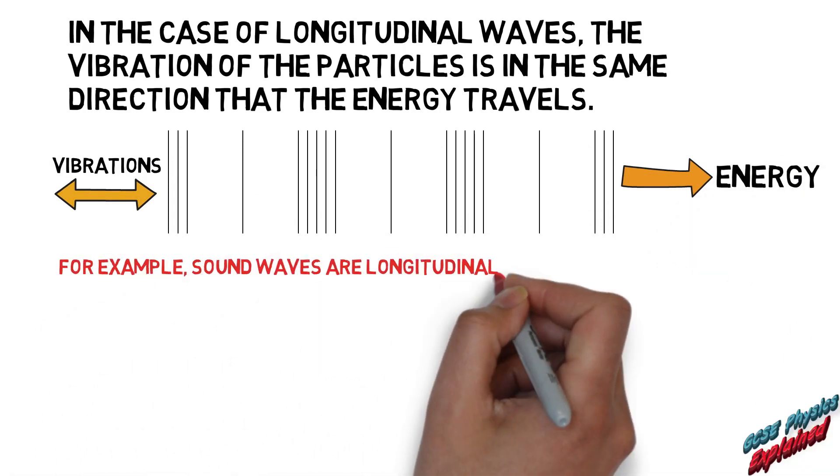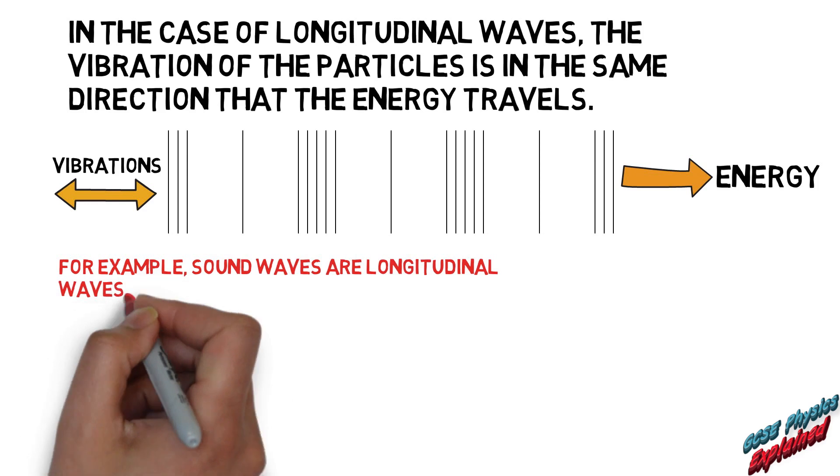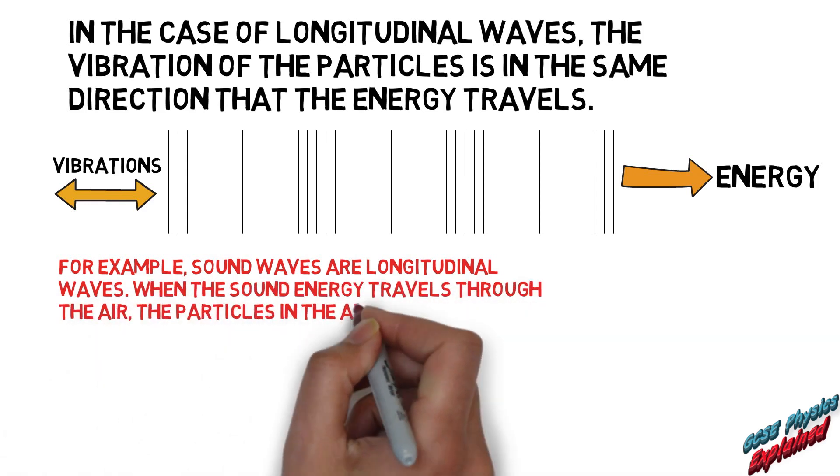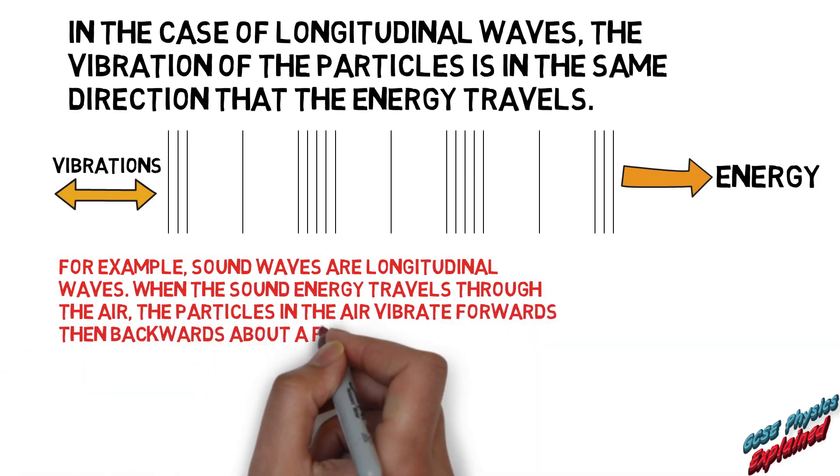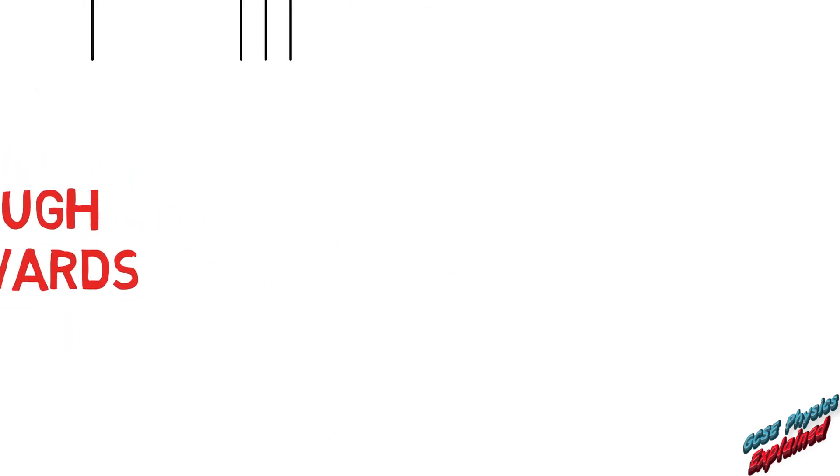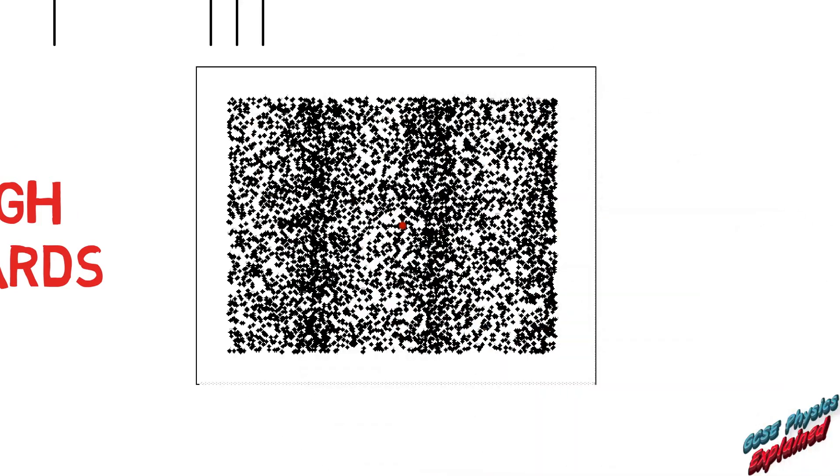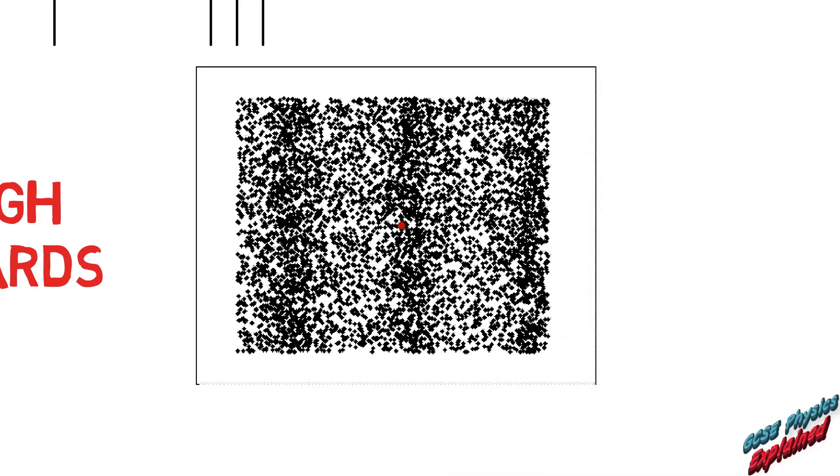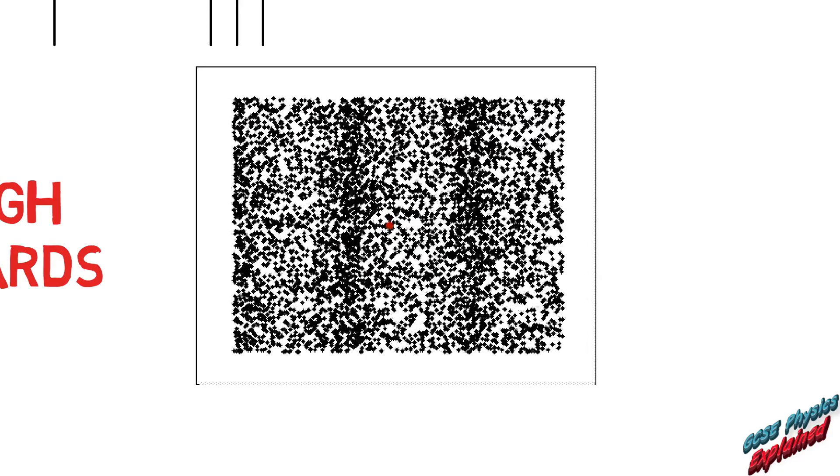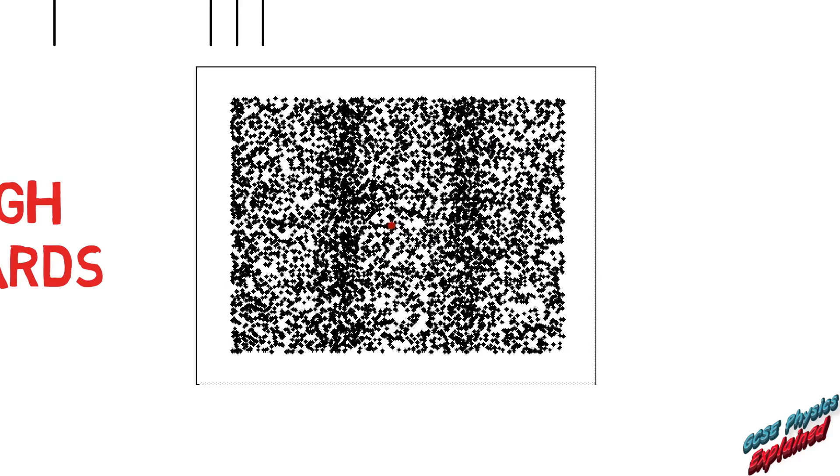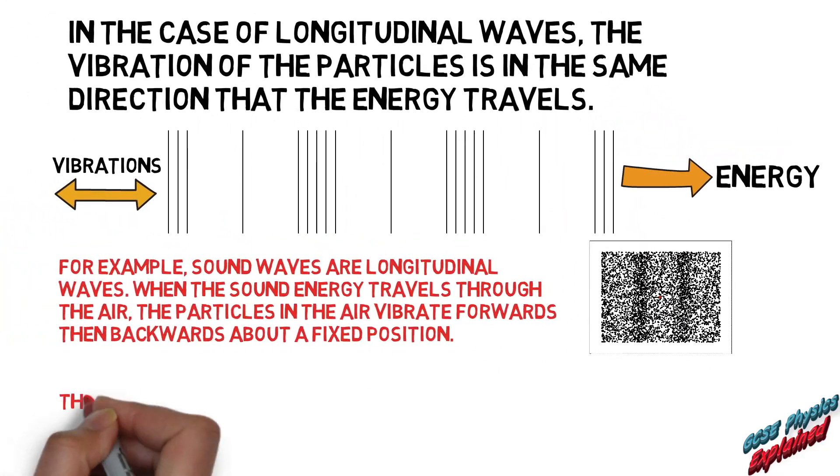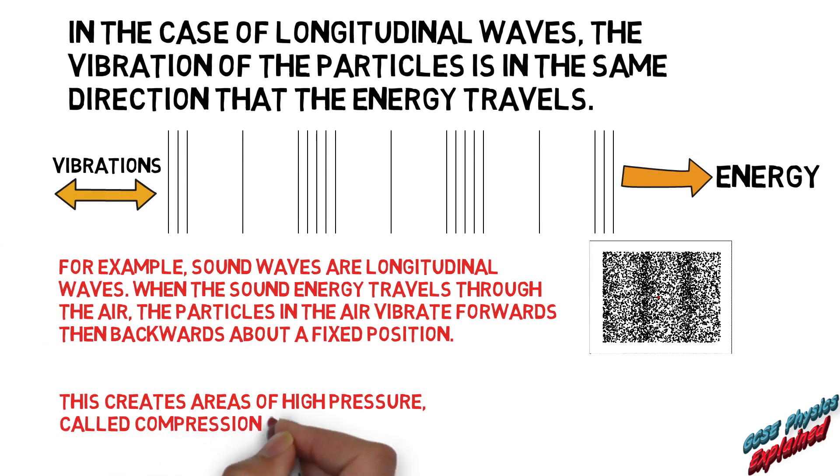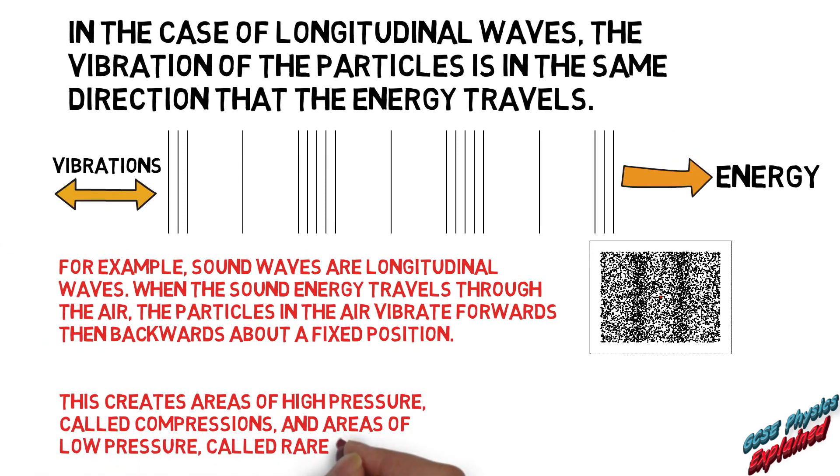For example, sound waves are longitudinal waves. When the sound energy travels through the air, the particles in the air vibrate forwards, then backwards, about a fixed position. This creates areas of high pressure called compressions and areas of low pressure called rarefactions.